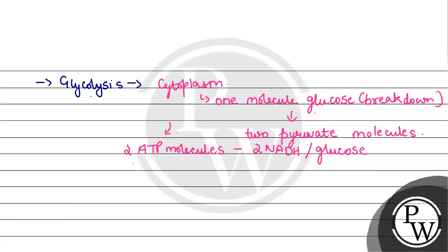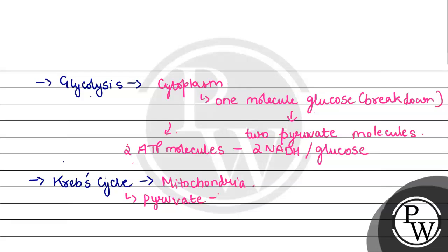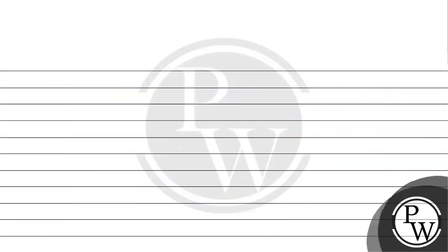Stage two is the Krebs cycle, also called the TCA cycle or citric acid cycle. This process generally occurs inside the mitochondria. The pyruvate formed in the cytoplasm travels into the mitochondria, where it is transformed into acetyl CoA. This acetyl CoA then enters the Krebs cycle, where a series of enzyme-catalyzed reactions take place.